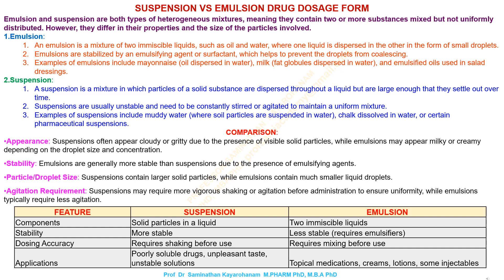Comparison. Appearance: suspensions often appear cloudy or gritty due to the presence of visible solid particles, while emulsions may appear milky or creamy depending on the droplet size and concentration. Stability: emulsions are generally more stable than suspensions due to the presence of emulsifying agents.